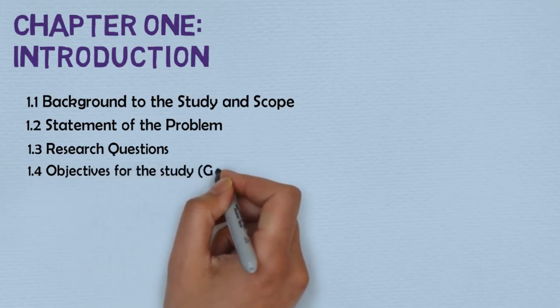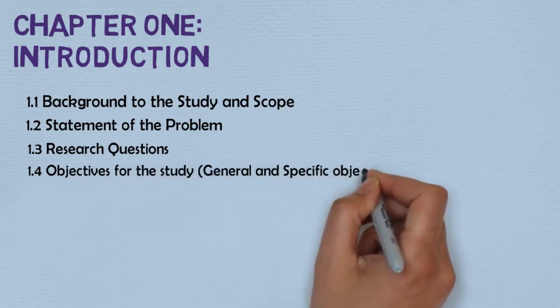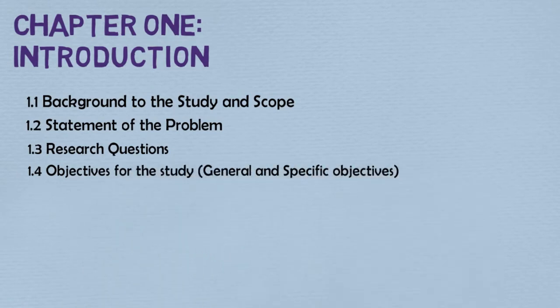Fourthly, under the introduction, we have the objectives of the study. After setting out research questions, you need to set out objectives. The statement of objective maps out the course of action to resolve the research question raised, which is operationalized by specific objectives. This means that in a public health research paper, you have a general objective and specific objectives.